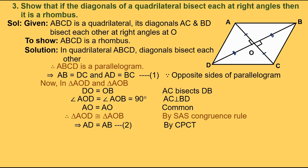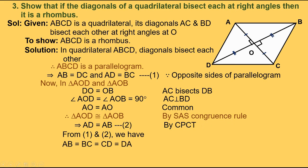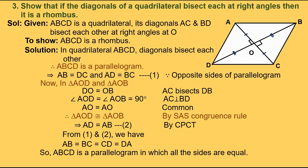Let's take that as equation 2. So we have AB equals DC and AD equals BC, but AB and AD are equal to each other. So from equations 1 and 2, we have AB equals BC equals CD equals DA. So ABCD is a parallelogram in which all the sides are equal. Thus, ABCD is a rhombus.